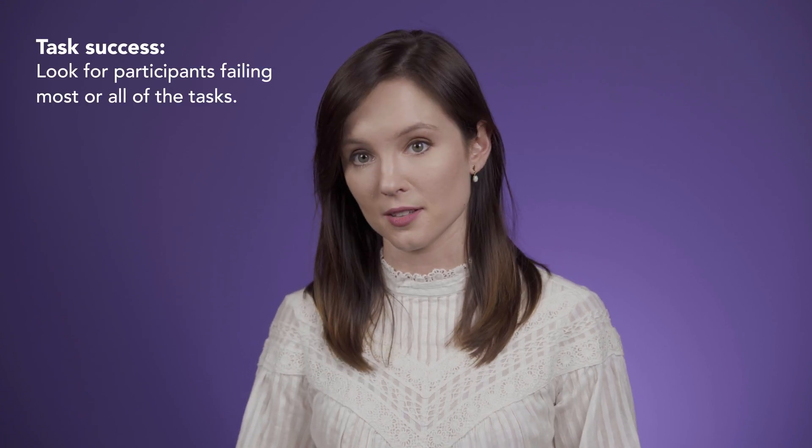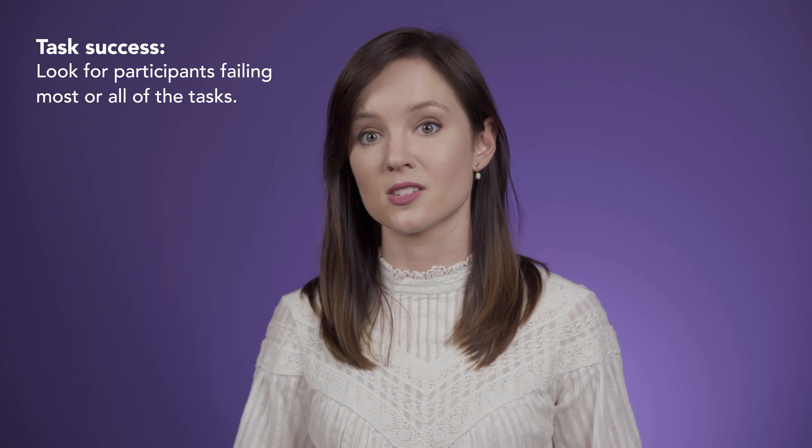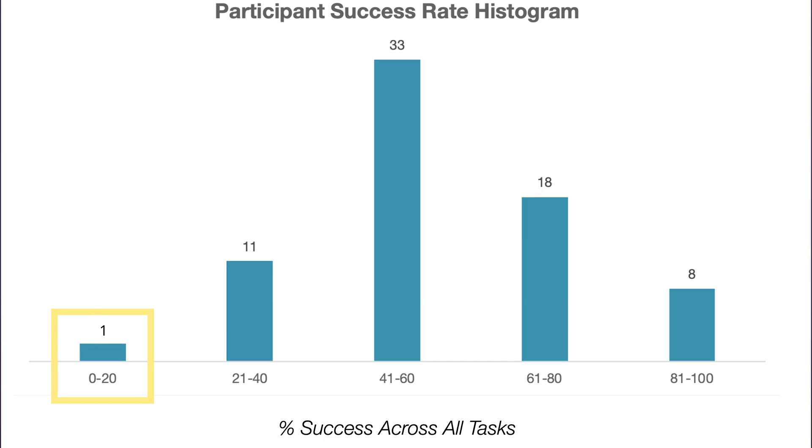Those people are certainly outliers for this task, but that doesn't necessarily mean that I should go ahead and throw away their data. It does mean that I should investigate further. After identifying those outliers, I might next go and watch the video recordings for those four participants to see what's actually going on. Are they actually trying? Are they actually representative of my user group? I can also go and look at task success per participant — how many tasks did each participant successfully complete? Maybe one of these participants has a really low task time and is failing most of the tasks. That's a good indication that this person is definitely an outlier and might be a cheater.